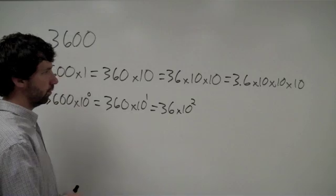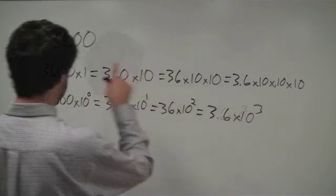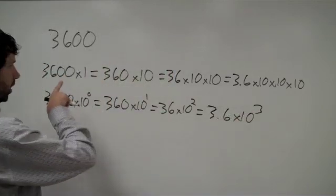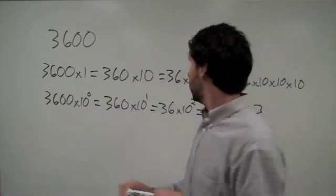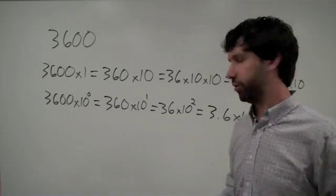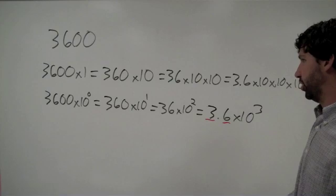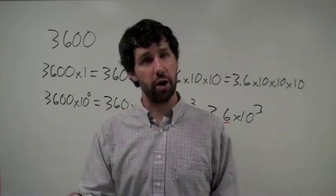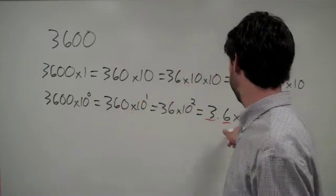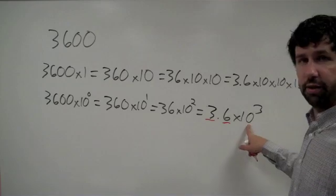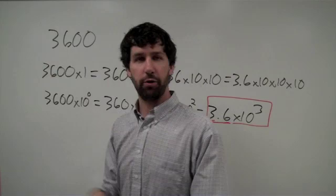Which is the same as 3.6 times 10 to the 3rd. From here, what we want to do is look at what scientific notation actually is. Scientific notation dictates that we always have, when we write in true standard scientific notation, a single digit, then a decimal point, any remaining digits. We usually leave off zeros, not always. We'll talk about that in a later lesson. We don't always leave off zeros, but we often leave off zeros. So, we have 3.6 times 10 to the 3rd. This is our official scientific notation for the number 3600.